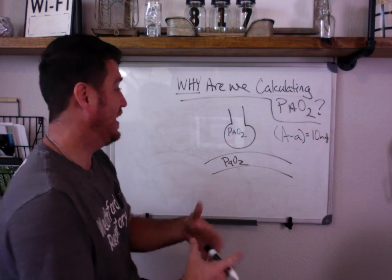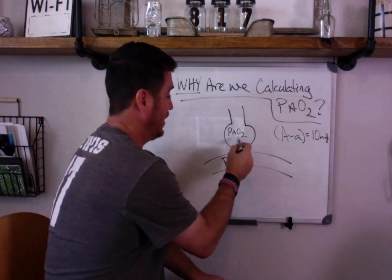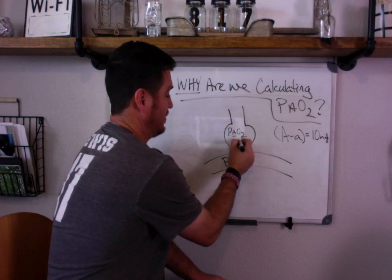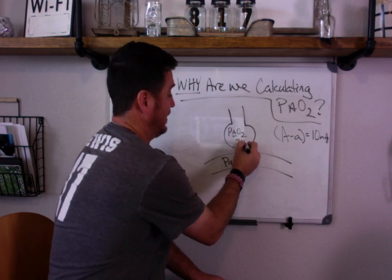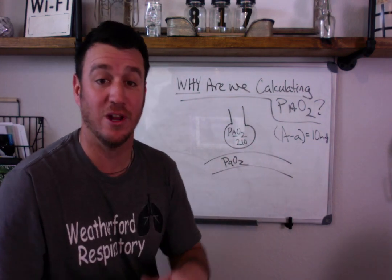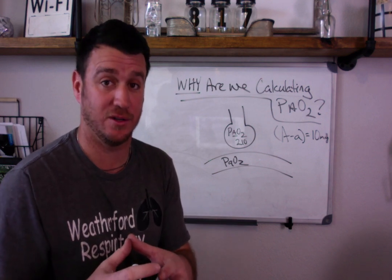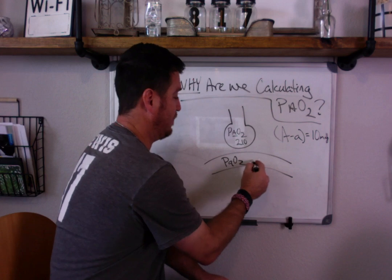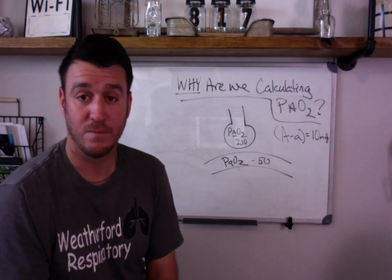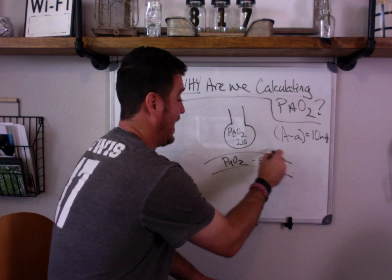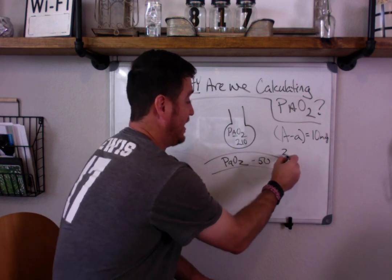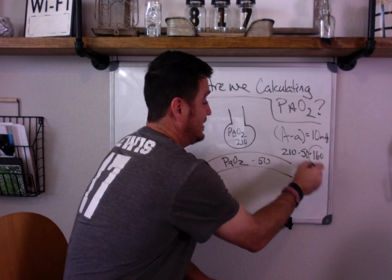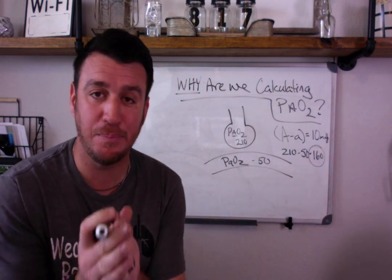Now when let's just say you have a PAO2 of let's just go with 210. Let's just say you have a really high FIO2 being administered. And now your PAO2 is 210 and your PaO2 is 50. Now look your A to A difference is now 210 minus 50 equals 160. Now this is important because